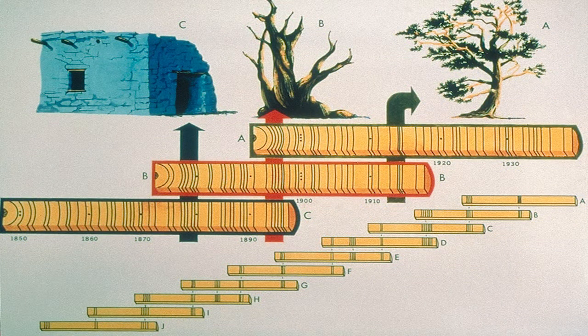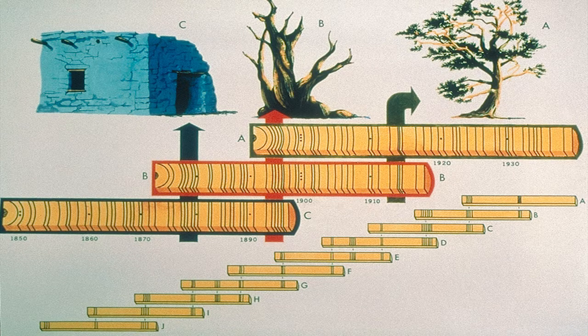Trees from the same region develop a similar pattern of ring widths during a given time period. Comparing these patterns, matching them ring for ring, and averaging over multiple trees establishes a chronology. Wood from ancient structures, when aligned with chronologies from living trees, extends a chronology even further back.